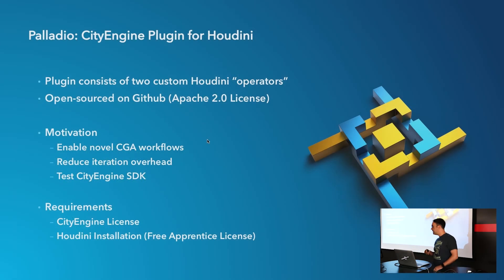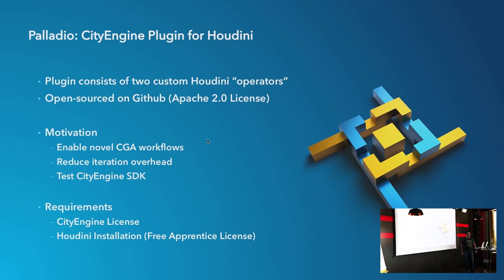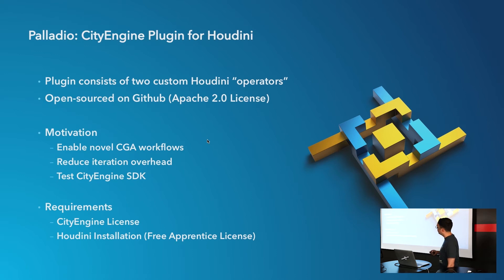So let me introduce Palladio. Palladio is a CityEngine plugin for Houdini — it provides two nodes to Houdini. It's open source, everything is on GitHub where you can download binaries or play with the source. Our motivation was first to test the CityEngine SDK and see how flexible our PRT APIs are. We eventually found there's new stuff we could do — remember the fishing nets. And of course we can reduce export-import overhead. At the current state, you need a CityEngine license and a Houdini installation — and Houdini has a free apprentice license.